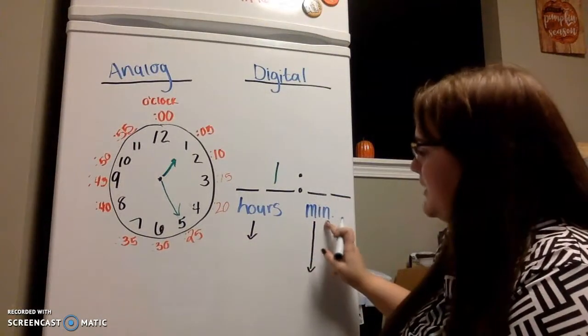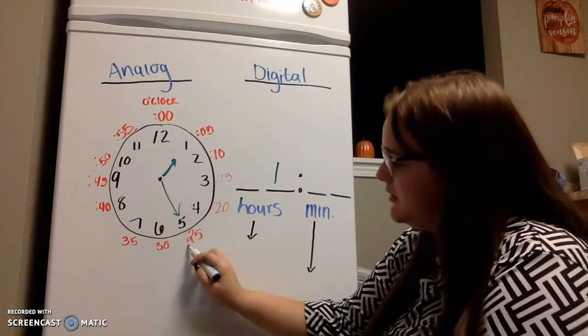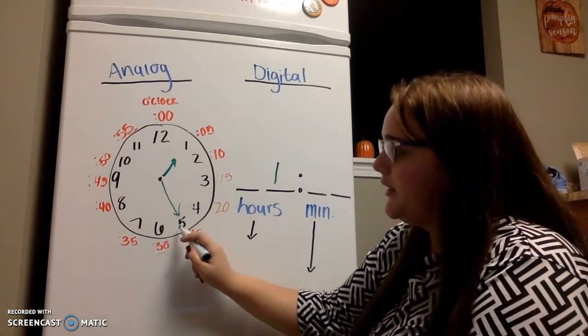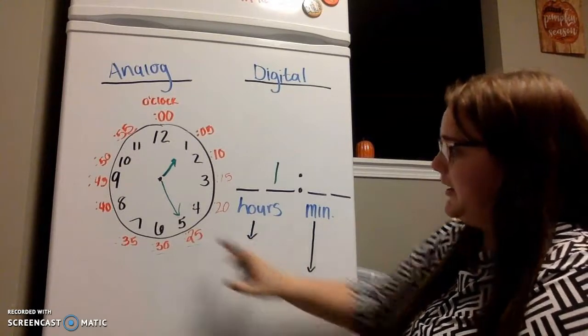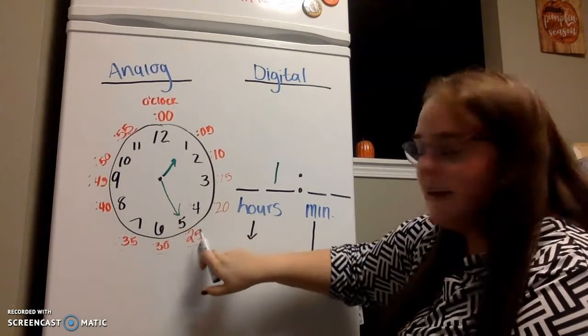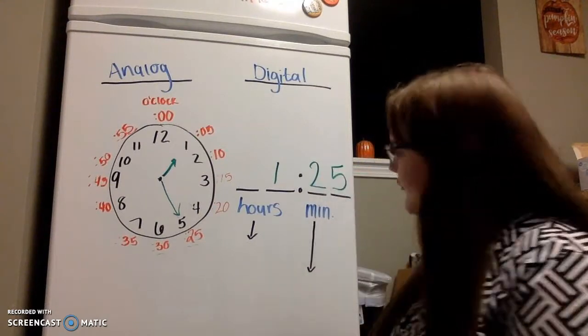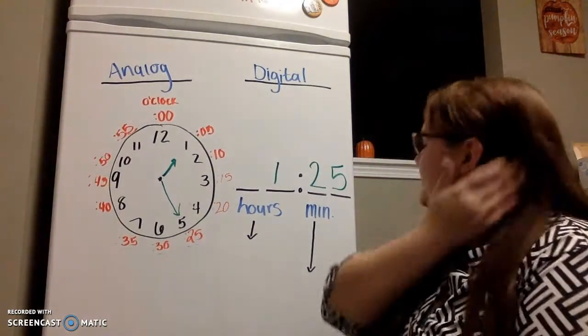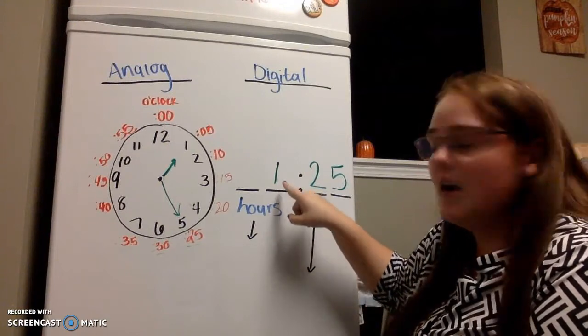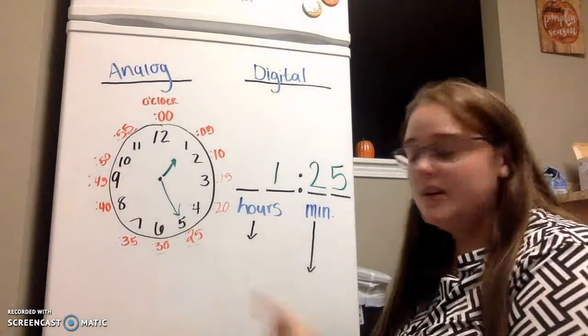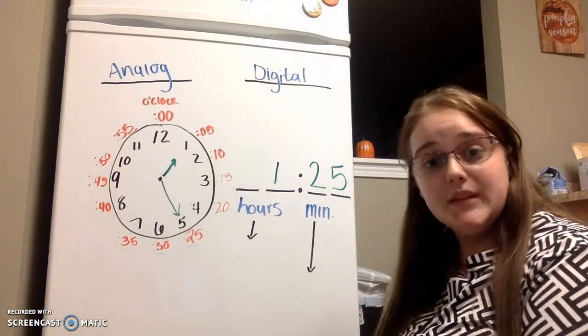And then in this, we said we were going to put the minutes, and the minutes are out here. They're what we have out here in red. So, pointing at our 5 with our long hand, pointing at 5, is 25. So, we're going to put 2, 5. And I read this like what? 1, 25. 1, 25. That's what time it is.